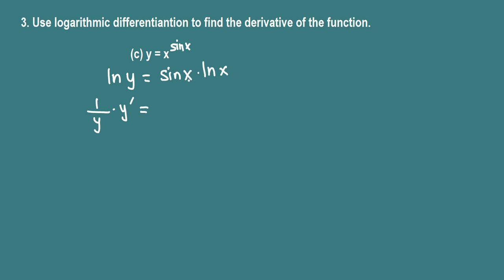Derivative of this product using product rule. Derivative of first factor: cos x ln x, plus derivative of second factor: 1 over x times sin x.